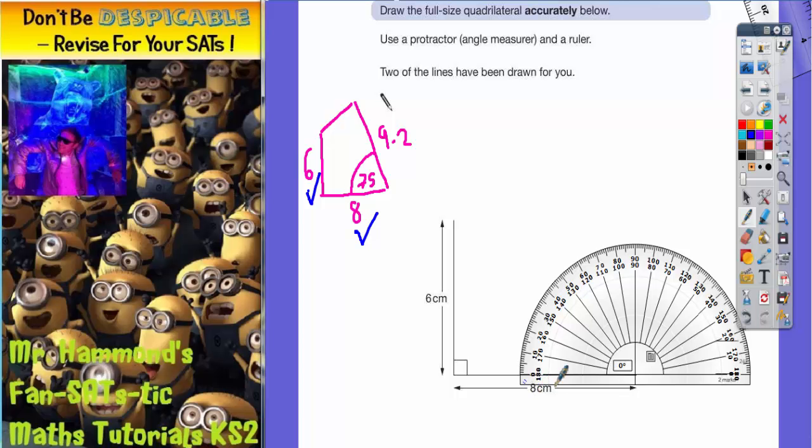I'm measuring from this line, so I start counting from this zero on this side: 0, 10, 20, 30, 40, 50, 60, 70, and we want 75, so 75 is there. Once I've marked off 75 degrees...